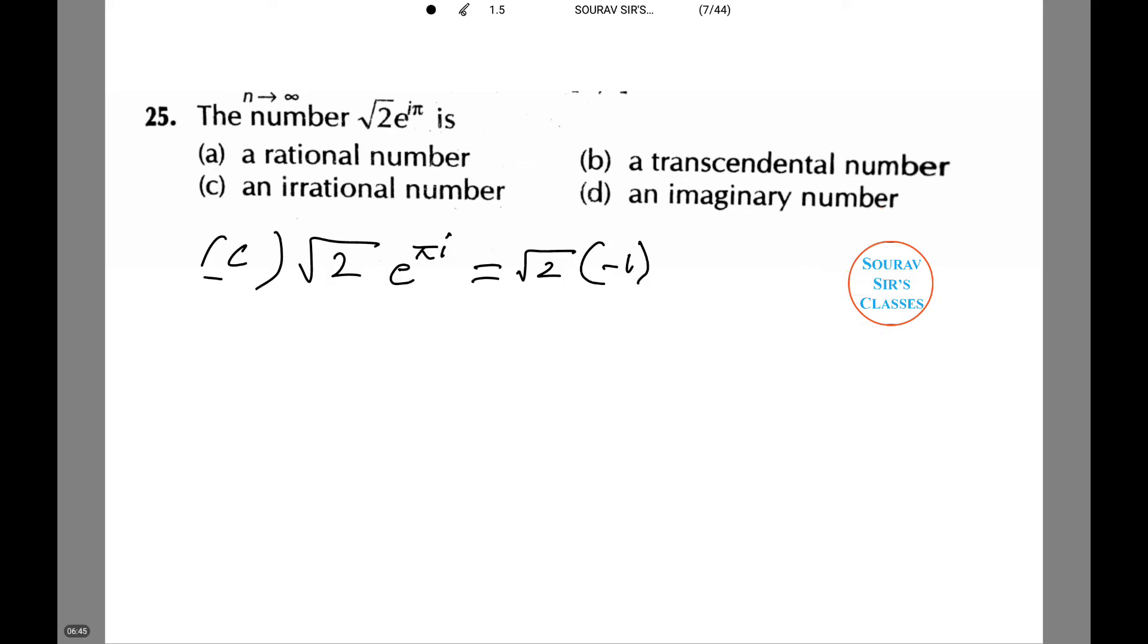The given number √2 e^(πi) equals √2 times (-1), that is equal to -√2, since e^(πi) equals -1, which is an irrational number. Hence option C is correct.